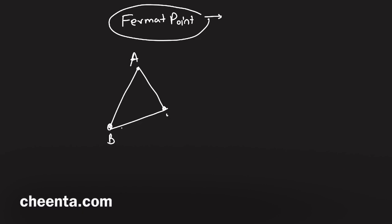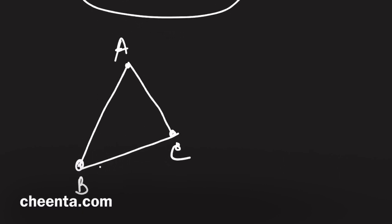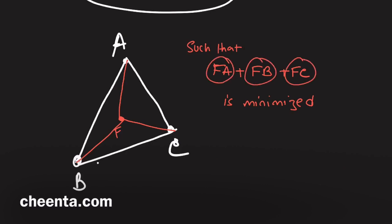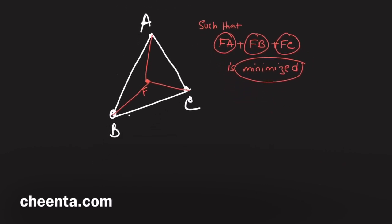What we really want is to find the point F inside the triangle such that FA plus FB plus FC is minimized. Let's join F to A, B, and C, and we want these three lengths—FA, FB, FC—their sum to be as small as possible.